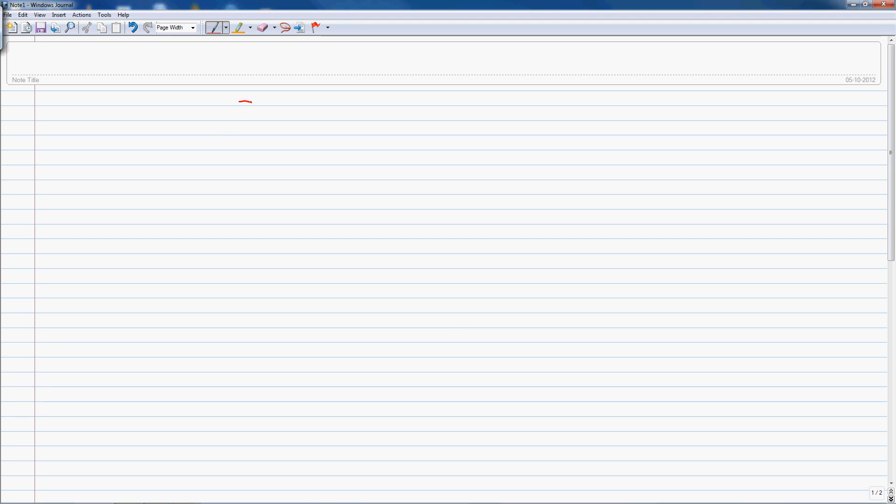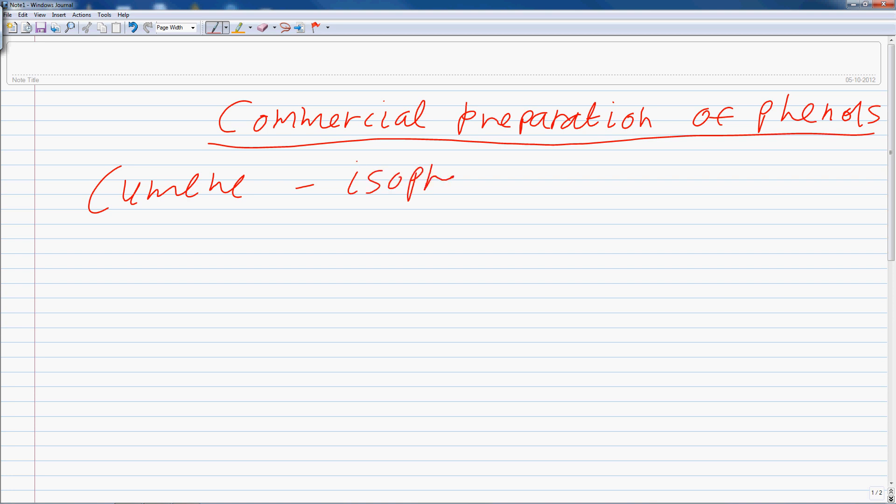Today we are going to learn the commercial preparation of phenols. Phenols are prepared commercially from cumene. Now what is cumene? Cumene is isopropyl benzene.